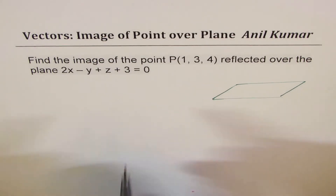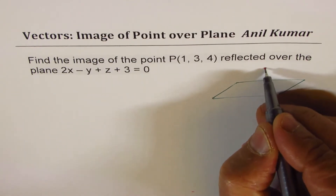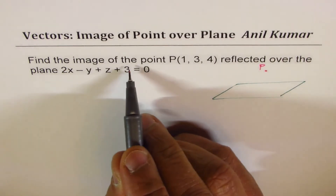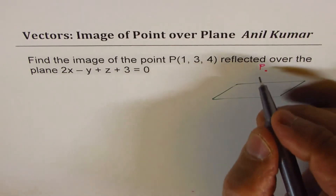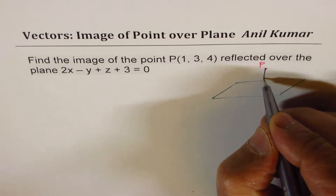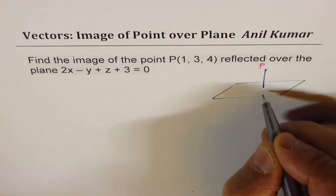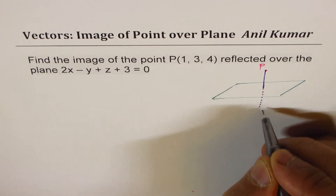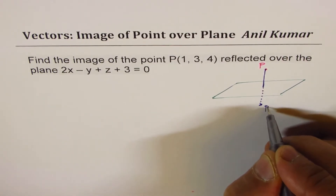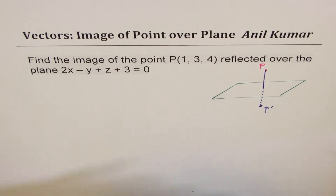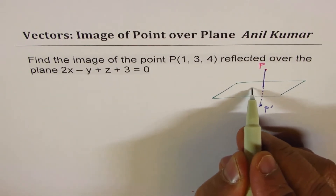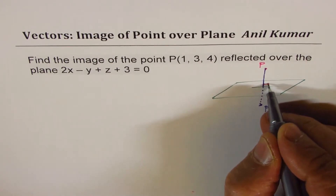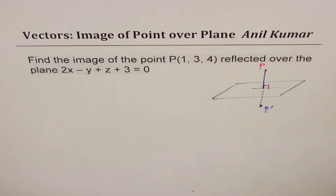Consider a plane whose equation is given to us, and if we consider a point P, we are looking to find its image. That really means that the perpendicular distance of the point to the plane and the image point P' should be the same. We'll assume this setup as shown.